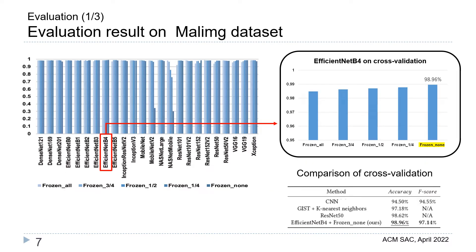Here is the result of evaluation on the Marl-IMG dataset. This figure shows the classification accuracy of each model, and many models achieved over 90%. The top model was EfficientNet with a frozen number setting. It achieved an accuracy of 98.96% on cross-validation. Our accuracy was the best compared to previous works.